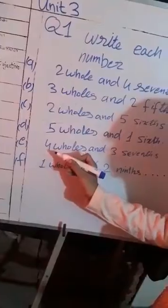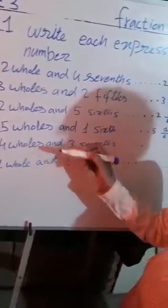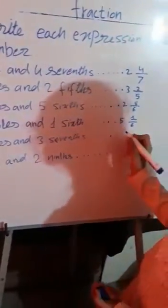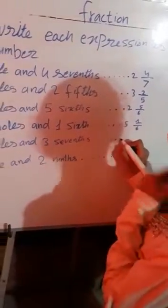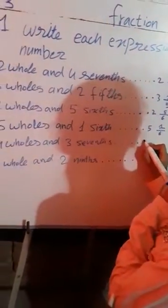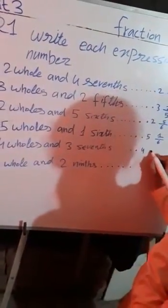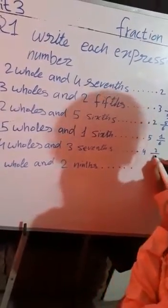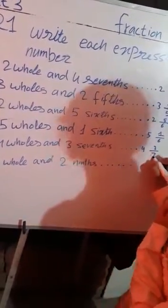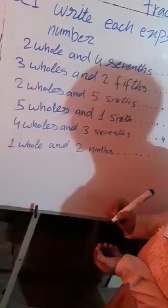Now we are doing Part E: 4 whole and 3/7. So we will write 4 on the side part, 3 on the numerator side, and 7 on the denominator side.